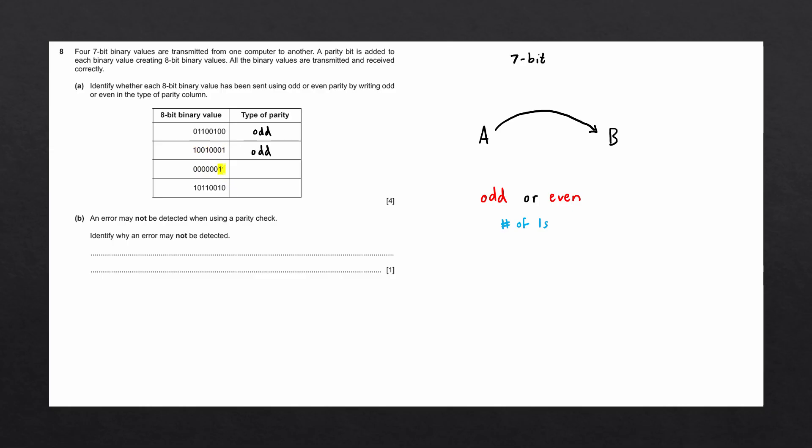The third one, we have two ones, so the parity is even. And the fourth one, there are four ones, so this is going to be even parity.